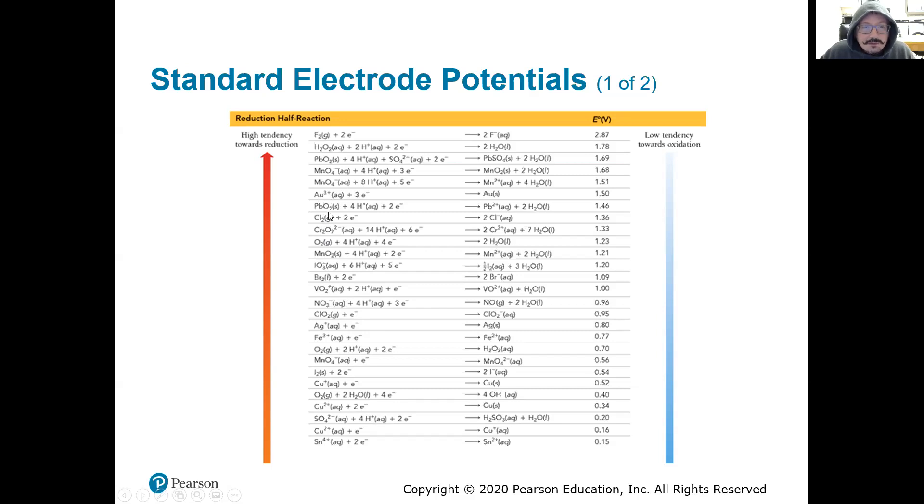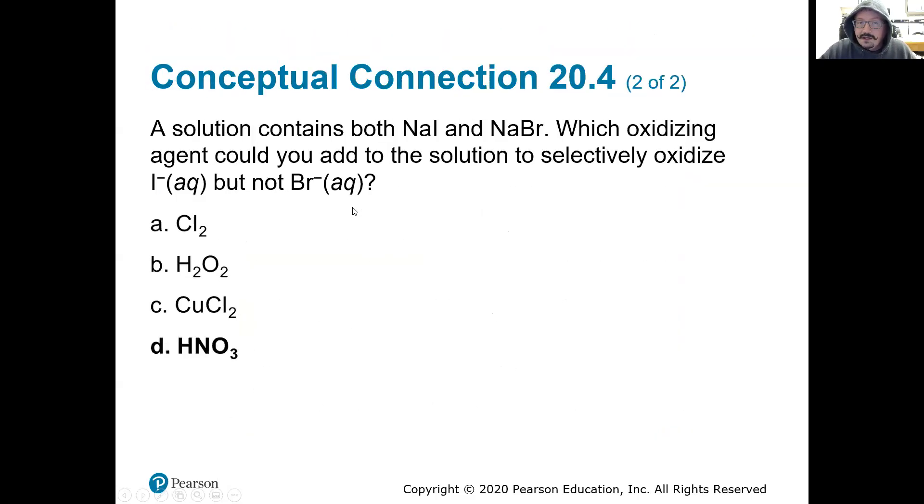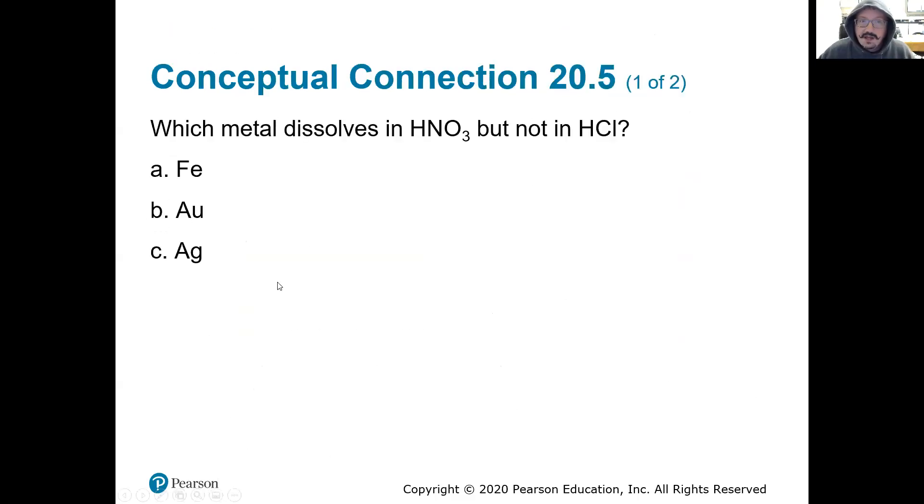When we go to that table, is it above or below this nitric acid? You can see it has a relatively high reduction potential. And you can see most things, silver, iron, coppers, a lot of these metals are below it. And there's only a few that are above the reduction of the nitric acid. There's our gold right there. This shows you why gold wouldn't dissolve in nitric acid.